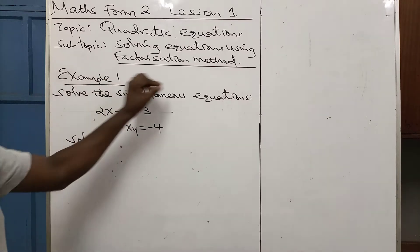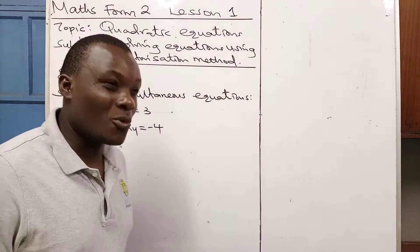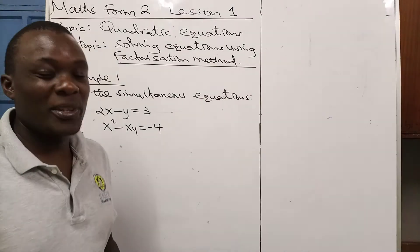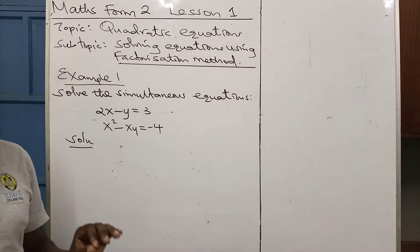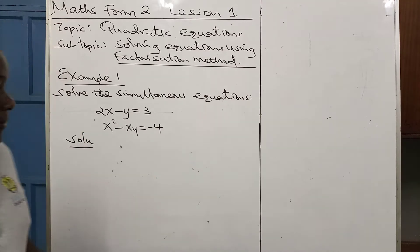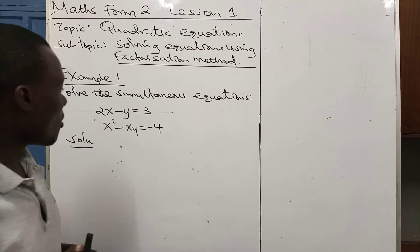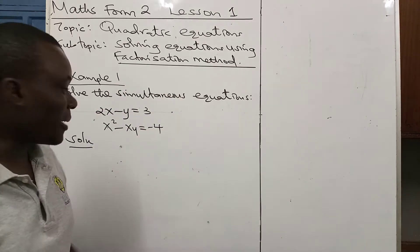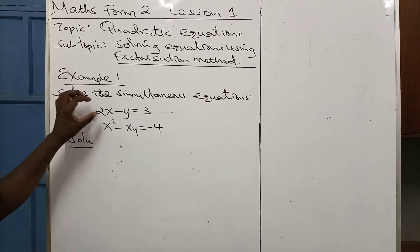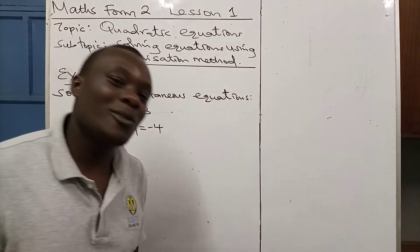The example we have here says: solve these simultaneous equations. Look at the equations given. The first one is a linear equation. How do you identify it as linear? You look at the unknown letters in that particular equation — we have X and Y. What power do these letters have? When you have X with no power written, it means it has power one. Y is also just Y; it has power one. The highest power of the unknown letters is one, so that makes it a linear equation.